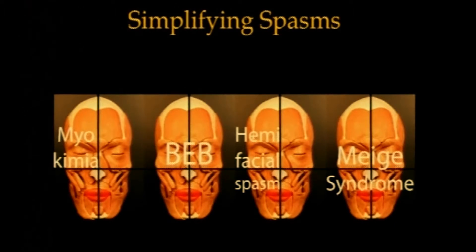BEB is essentially a bilateral condition — it is like presbyopia. You do not say right eye or left eye. BEB means it is bilateral and involves the upper half of the face. When one vertical half of the face is involved, that is called hemifacial spasm.